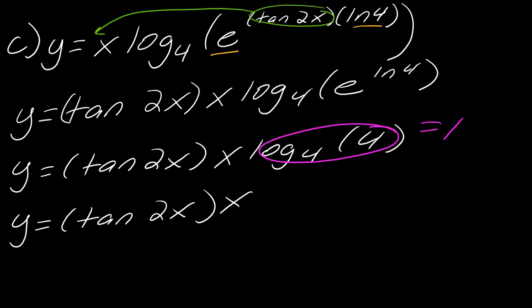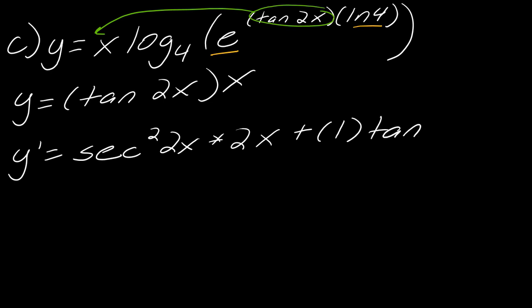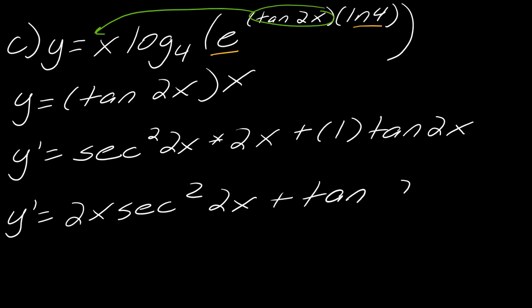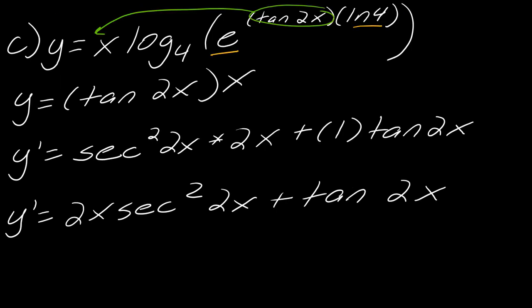All that stuff with logarithms actually dropped out as a consequence of using logarithmic properties — kind of crazy. Now let me clear some space and take the derivative. The derivative of tangent(2x) is secant squared(2x) times 2, times x — leaving x alone — and then plus tangent(2x) times the derivative of x, which is 1. So my derivative is 2x secant squared(2x) plus tangent(2x). This one is a clever problem that you only get by really thinking about the properties, pausing for a second, and going on a little bit of a journey rather than just rushing to the answer.